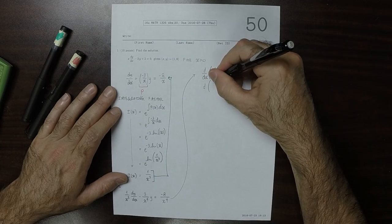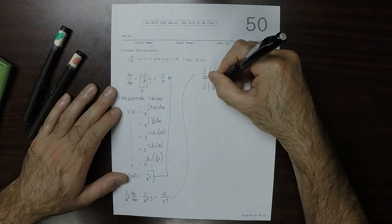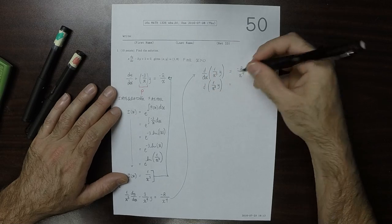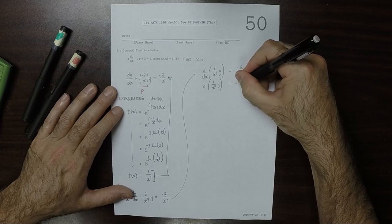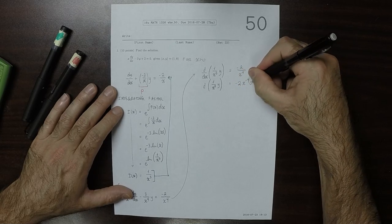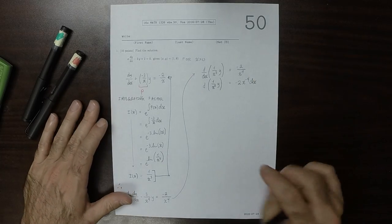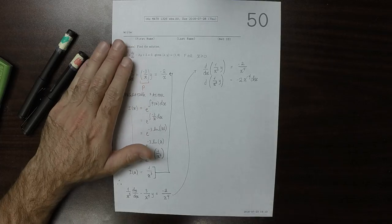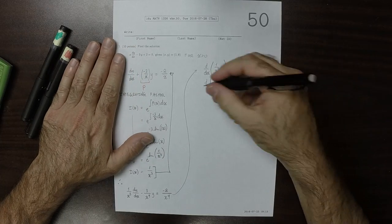We can split the differential into two differentials as negative 2 x to the negative 4 dx. The whole point of the integrating factor was to get to this position. Now we can anti-differentiate.